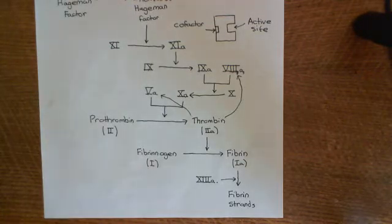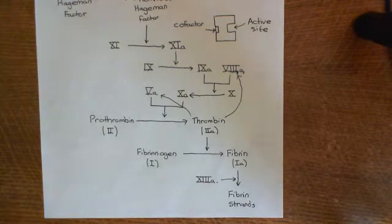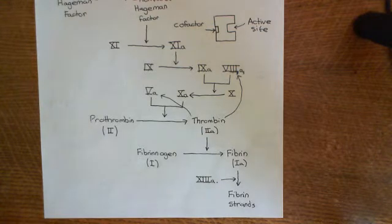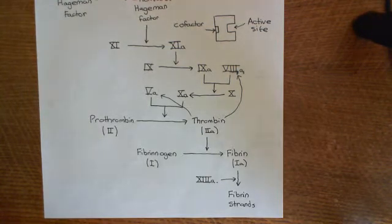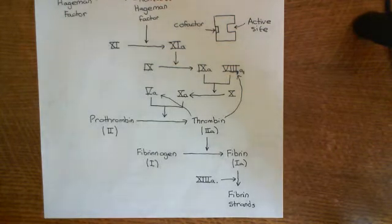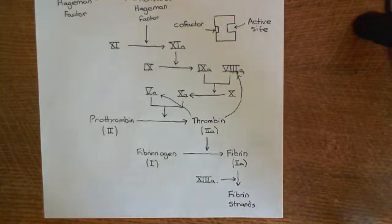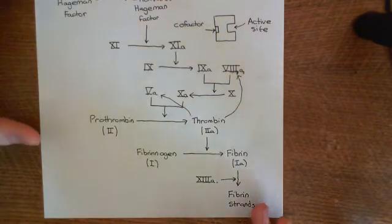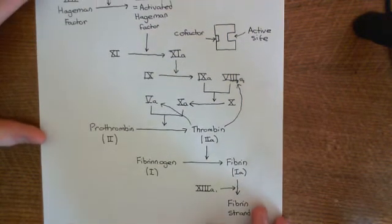Welcome to this next video in which we are talking about thrombosis and antithrombotic drugs. We have now discussed most of the hemostatic pathway and are in the process of discussing coagulation, which is the process by which fibrinogen, an inert protein within the blood, is converted into fibrin, which is then assembled into fibrin strands.